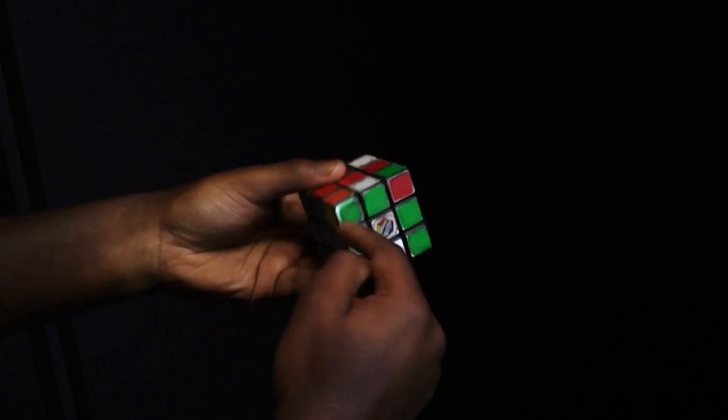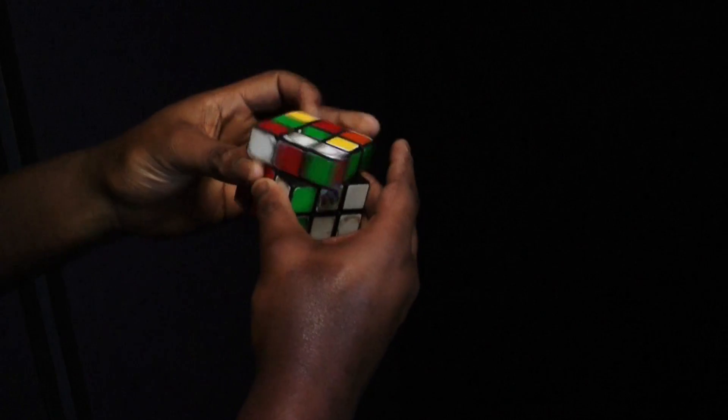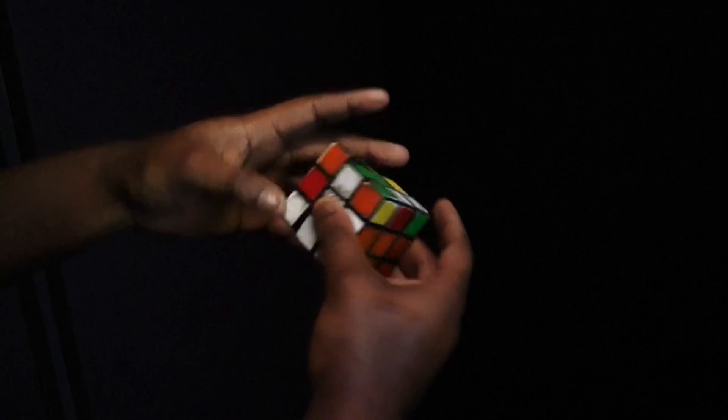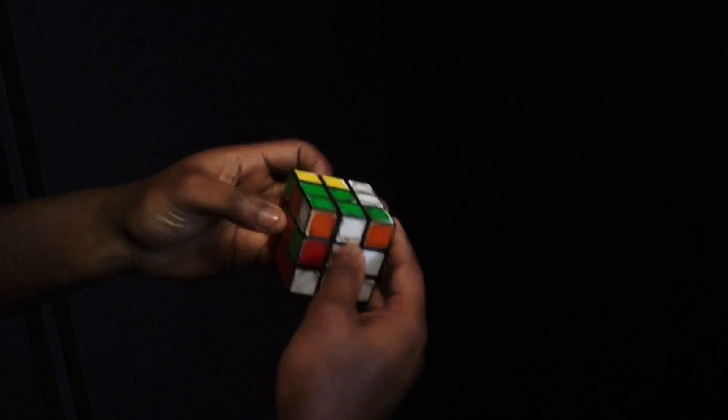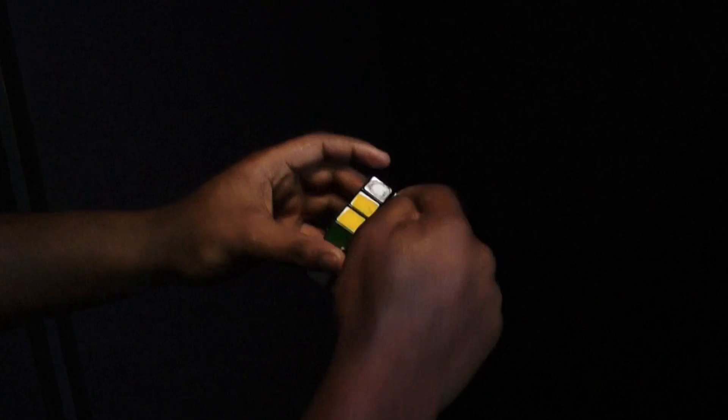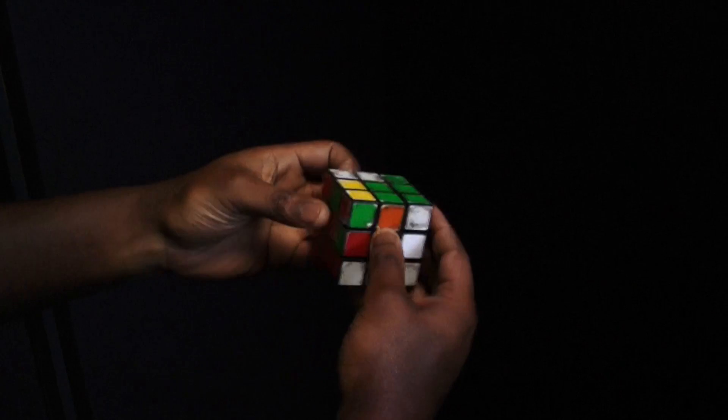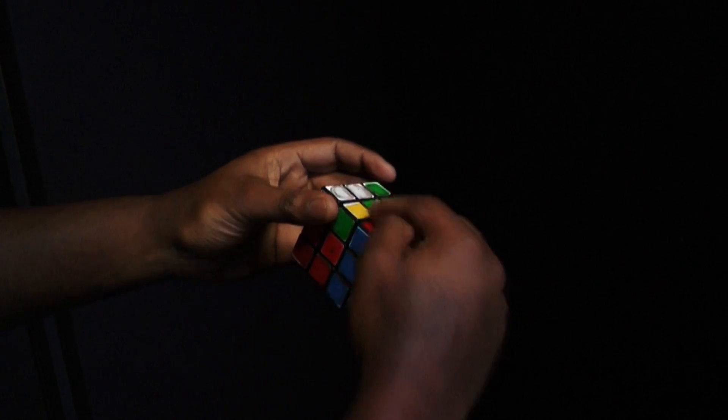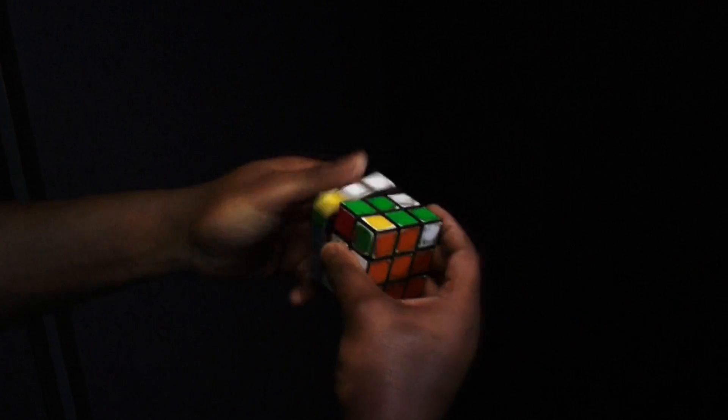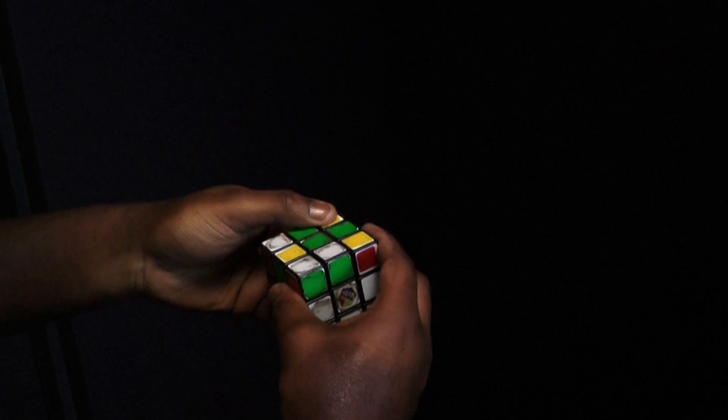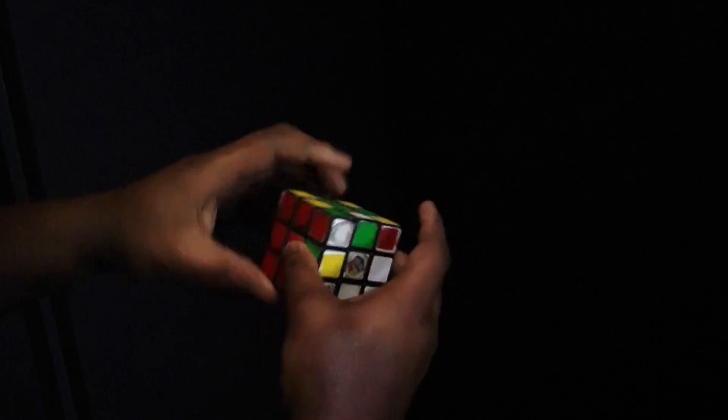There we are. And now we're trying to get this going. Got the blue on the bottom. So you've got the white there. And the white there. You always want to move up the opposite colour. Now we need to take care of that.